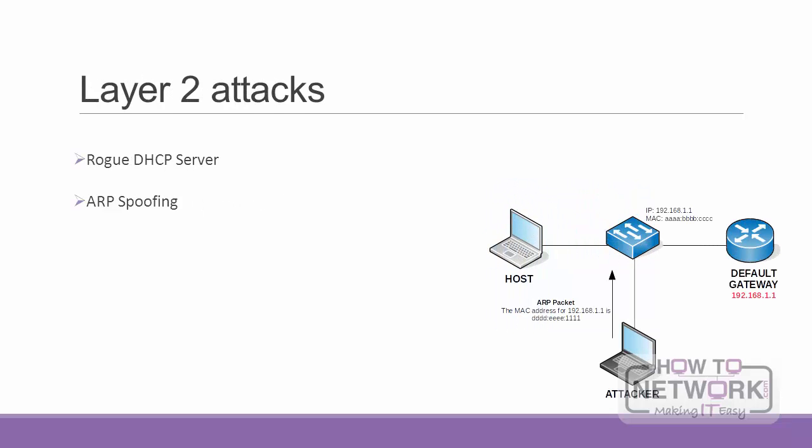Let me quickly explain the concept of a rogue DHCP server. Basically, you have a device that is handing out IP addresses to people trying to connect to your network, and this device is not under your administrative control. This is what a rogue server is. It may not be an intentional act to sabotage your network, or it could be the work of an attacker.